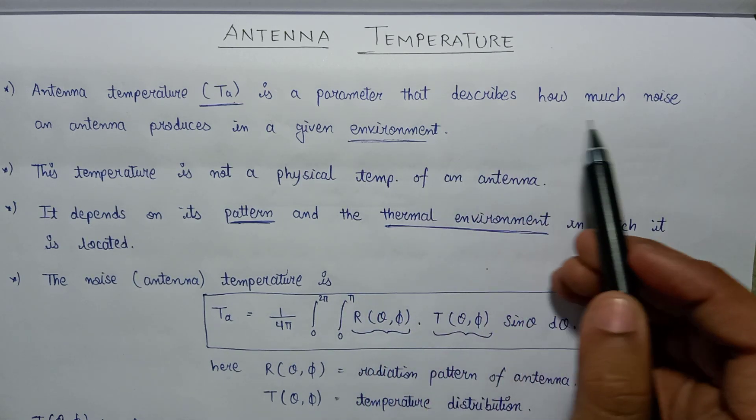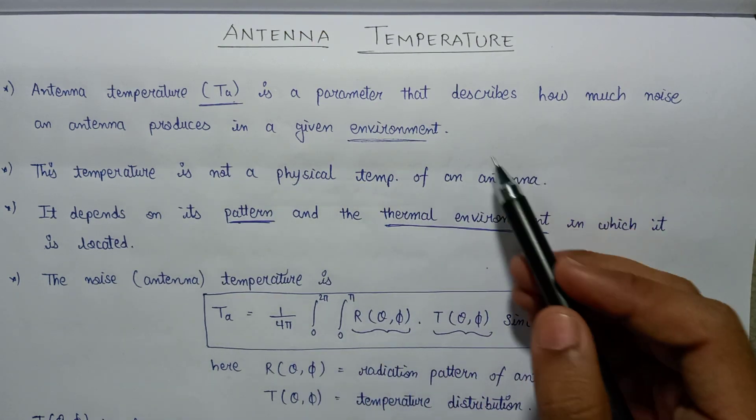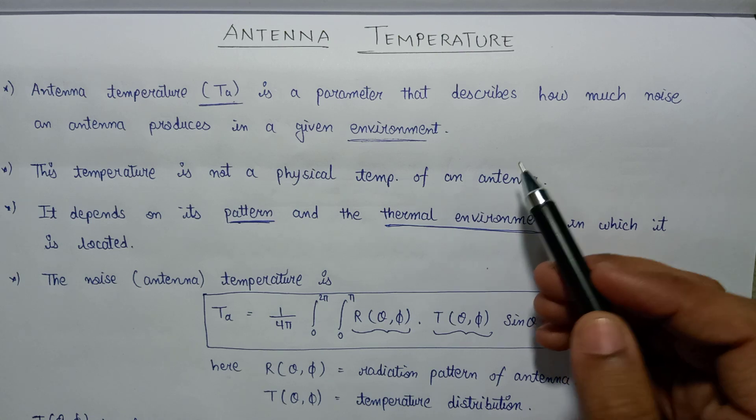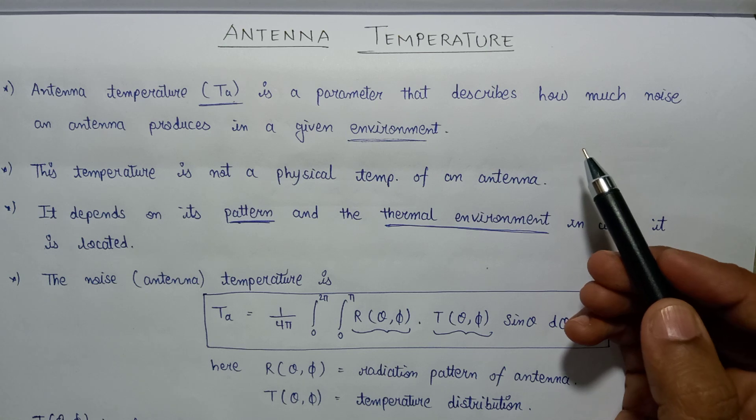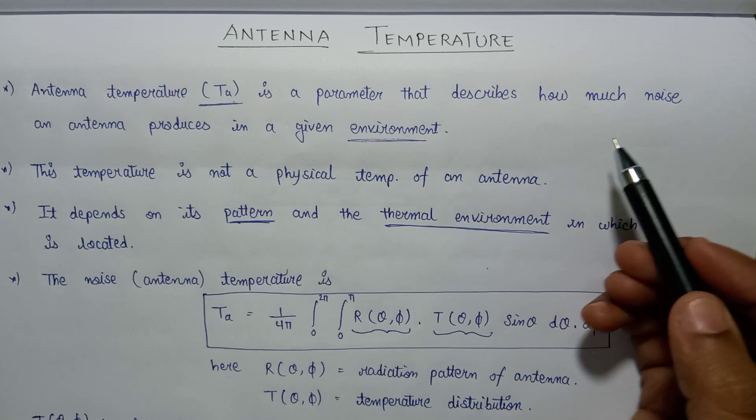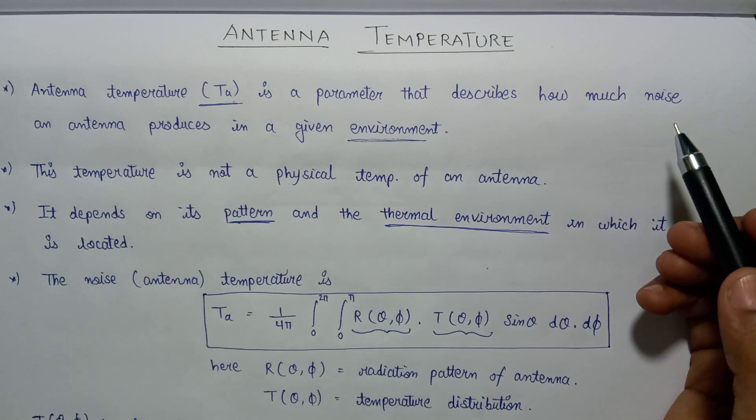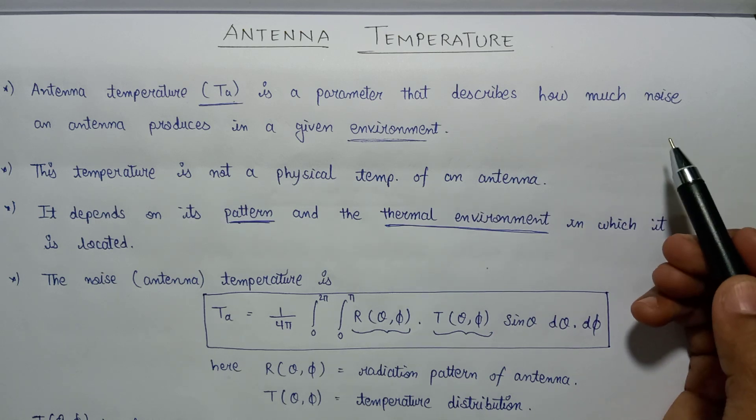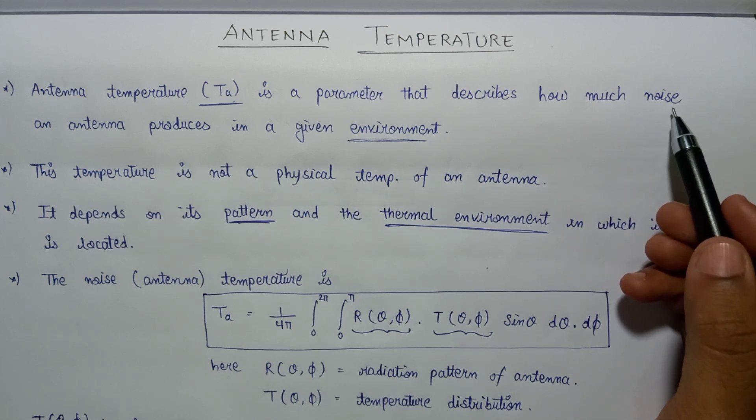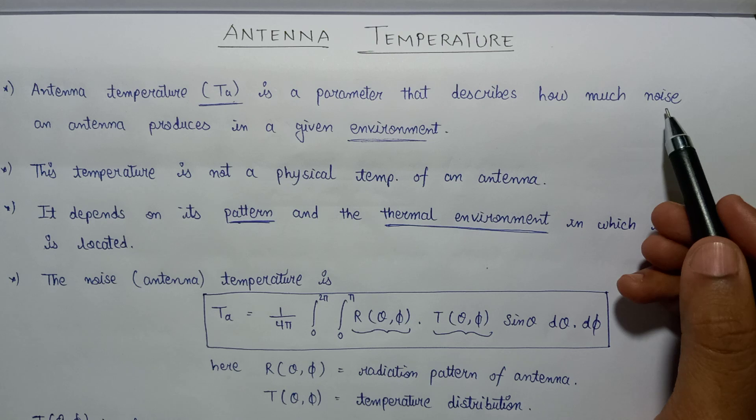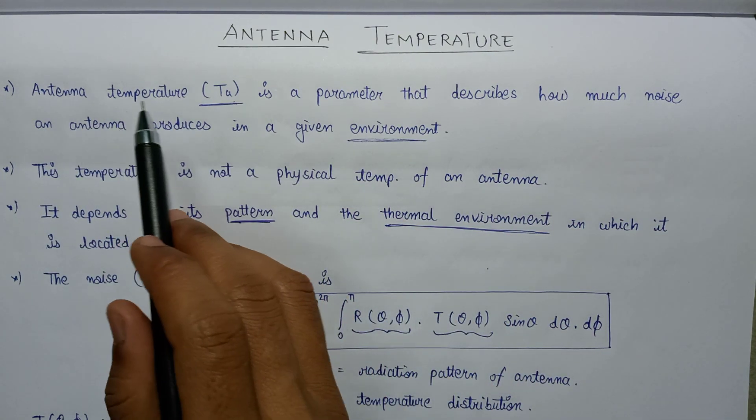It generally focuses on the noise that is produced by an antenna. If we apply some amount of power at an input terminal of an antenna, then in case of the transmitting antenna it will radiate some amount of power, but in addition to the radiated power, the antenna will also produce some amount of noise. The noise generated by an antenna will be measured by the parameter that is termed as antenna temperature.